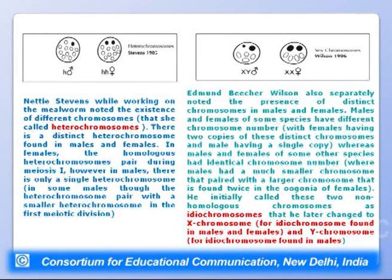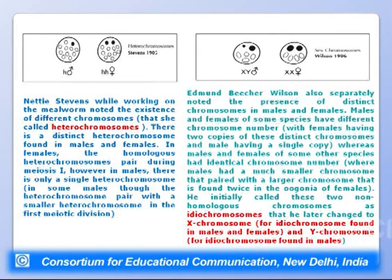In some species, females have two copies of distinct chromosomes while males have a single copy; in others, both sexes have the same chromosome number but males have a smaller chromosome pairing with a larger one found twice in females. Wilson initially called these idiochromes, then renamed them: the X chromosome for idiochromes found in both sexes, and the Y chromosome for idiochromes found only in males. This marked the discovery of sex chromosomes.